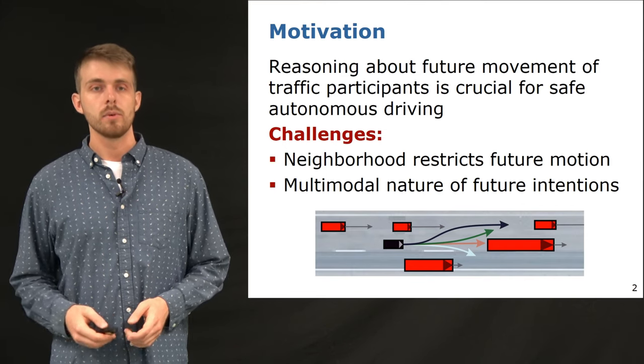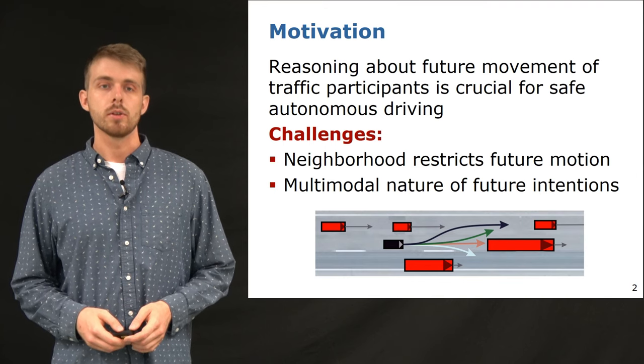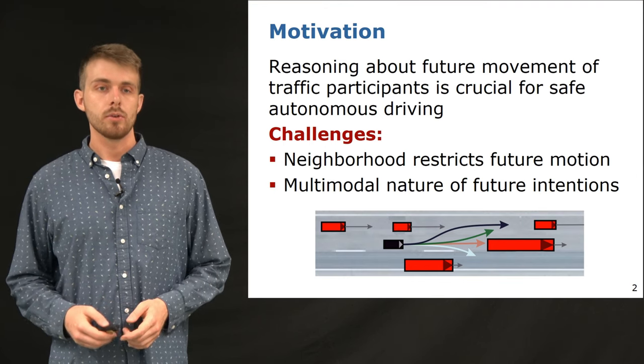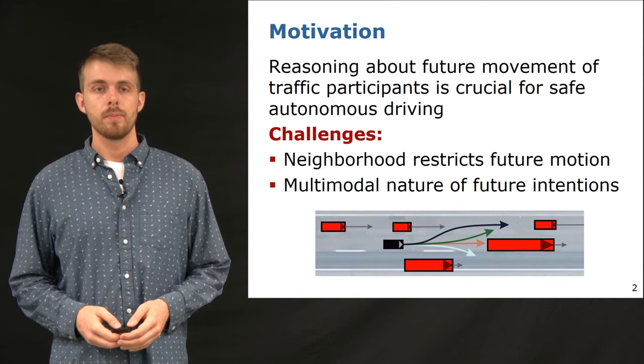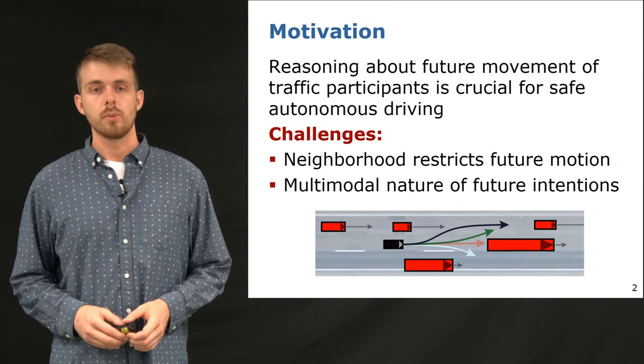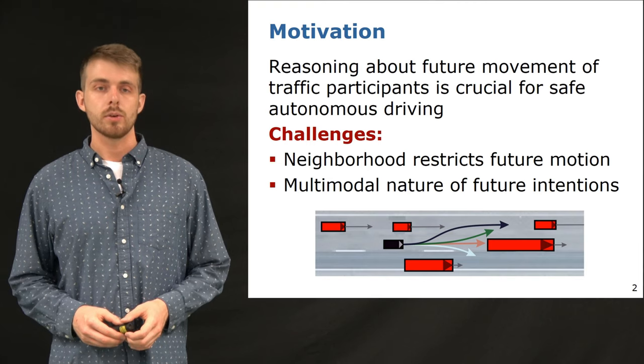From this example you can already see that other vehicles restrict the possible future movement and not all maneuvers, like for example lane change, are likely to happen. Multiple future trajectories are possible and some examples are shown here.